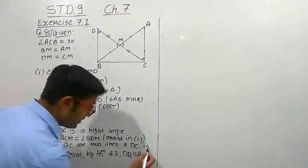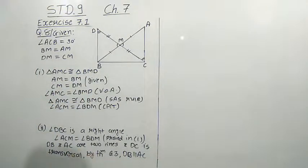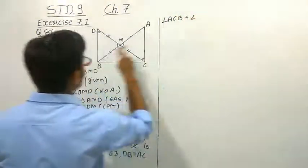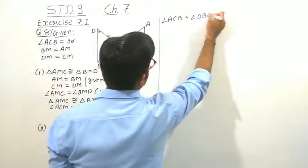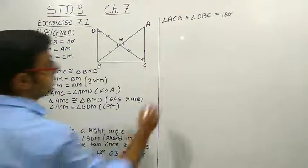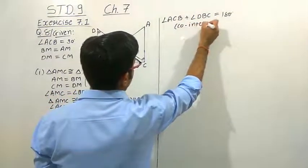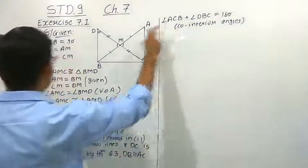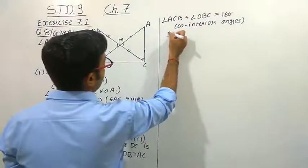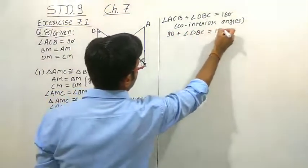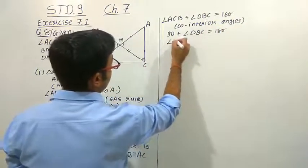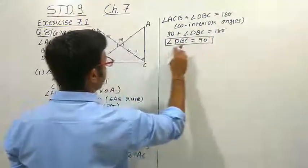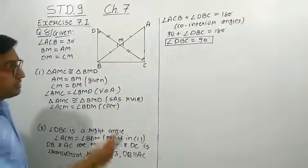Now we can write that angle ACB plus angle DBC equals 180 degrees, because they are co-interior angles (since DB is parallel to AC with BC as transversal). Since angle ACB is 90 degrees, putting that in: 90 plus angle DBC equals 180 degrees. Therefore angle DBC equals 90 degrees — that is, angle DBC is a right angle.